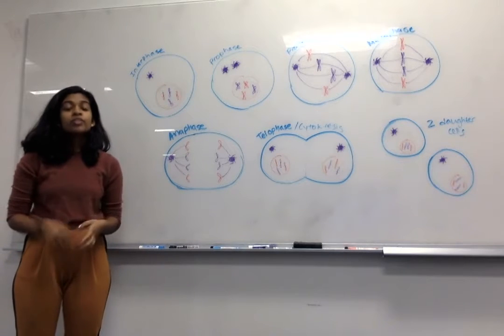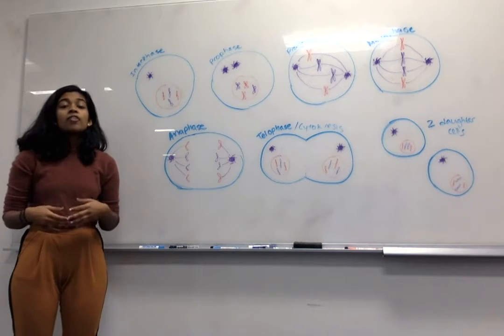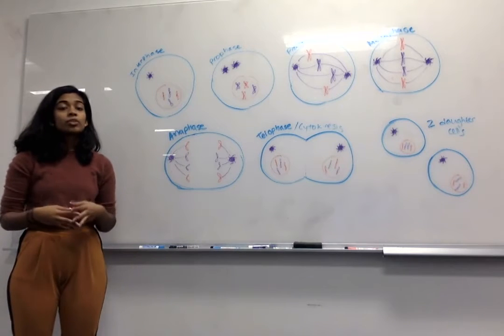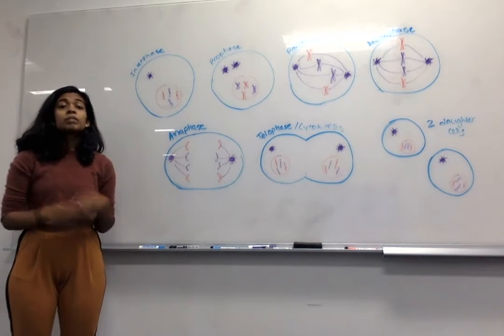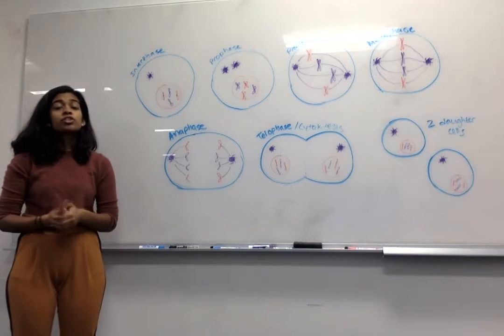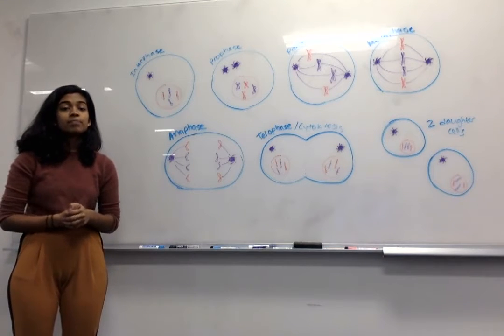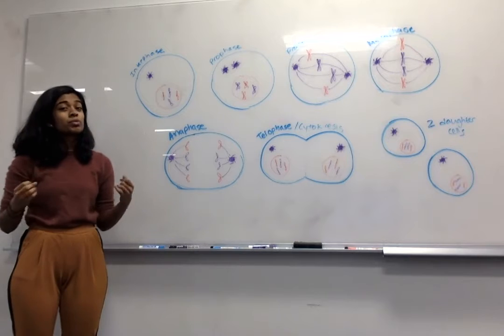During the rest of prophase, the chromosomes start to condense, and the nuclear envelope breaks down, releasing the chromosomes into the cell. At this stage, the mitotic spindle also forms, which is a structure made of microtubules and proteins. The spindle helps to move chromosomes around during mitosis.